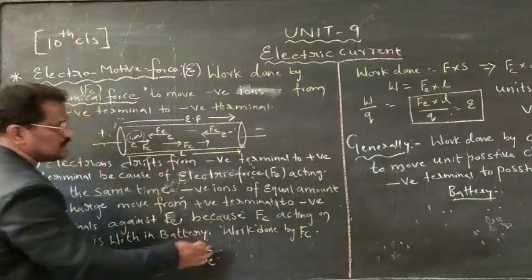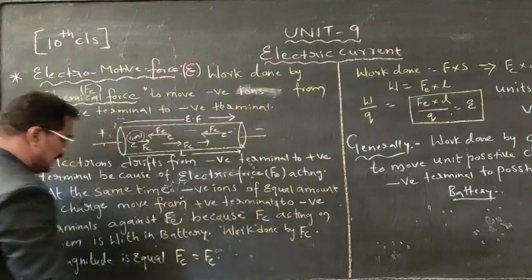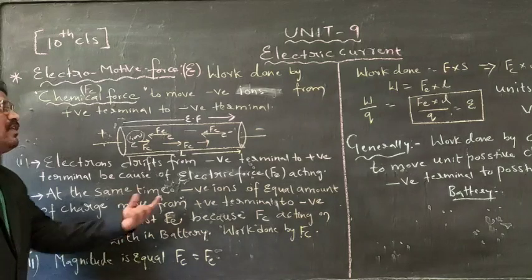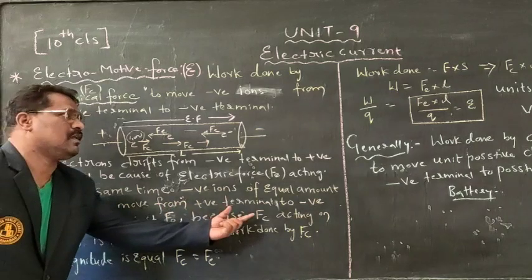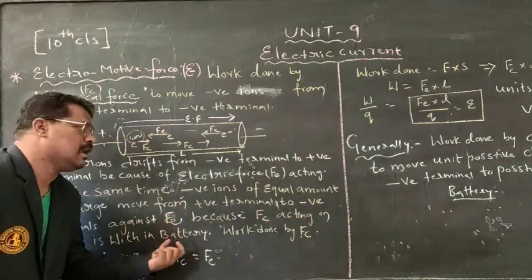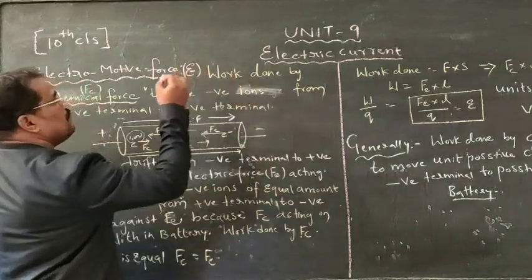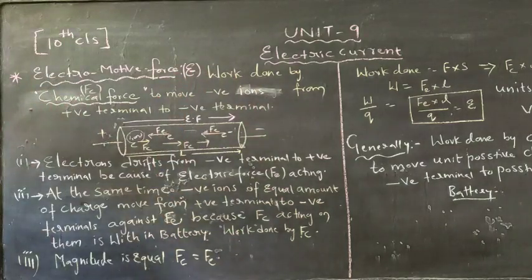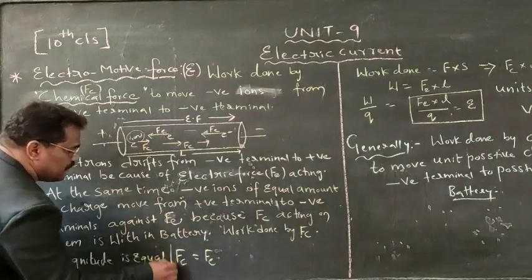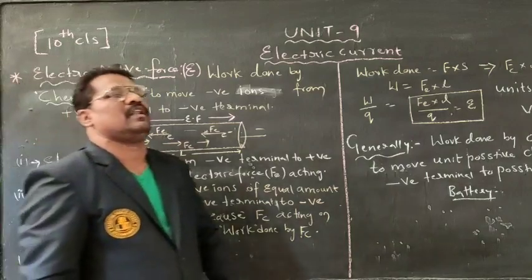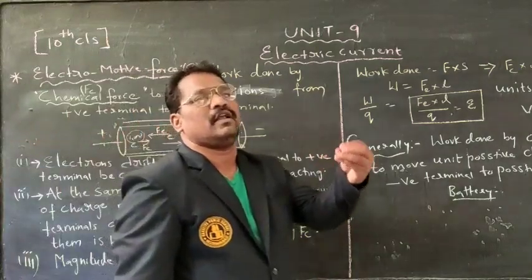Because of this, chemical force Fc is acting within the battery. This chemical force is produced from the battery. Therefore, work is done by the chemical force — that is Fc. Also, we observe that chemical force as well as electrical force are both equal in magnitude.